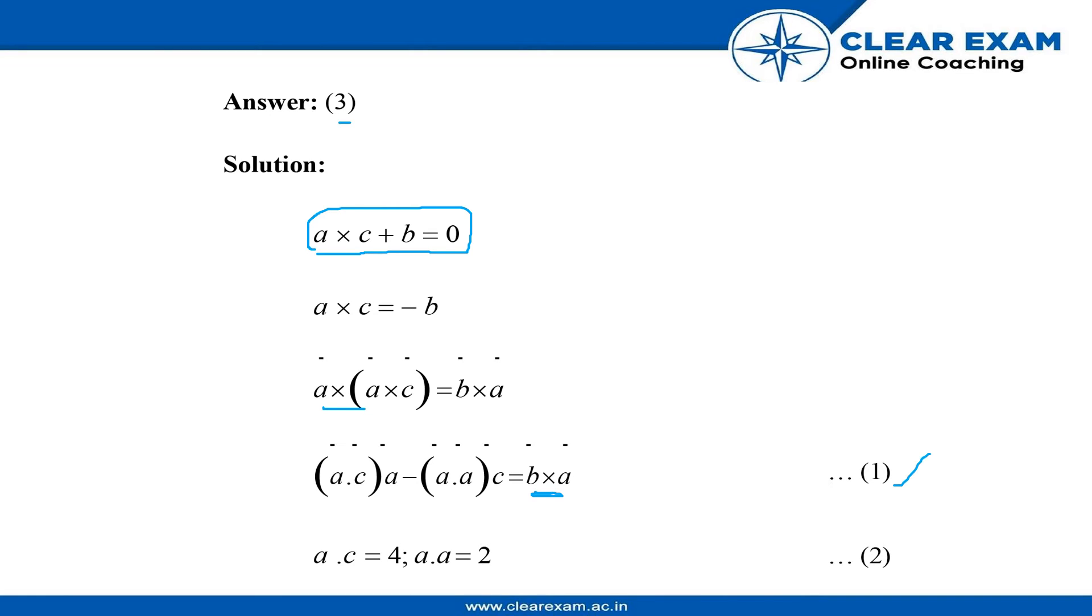This is considered as equation one. We were given with the second condition that a dot c equals four. So we can write by equation one that a dot a equals two.